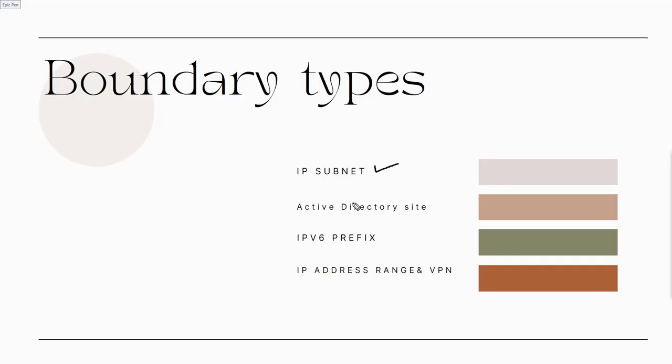Now let's understand the types of boundaries. The first type is IP subnet, which requires a subnet ID — for example, an IP address of 10.0.0.1. If you provide a network with a default gateway or subnet mask value, the subnet will be automatically calculated when you save the boundary. The second type is Active Directory site boundary, where you specify the site name by typing it or browsing from the local forest in Active Directory.